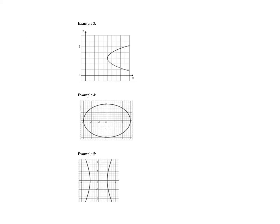In this graph, if you just need to state the domain and range from the picture: going to the right, the line is continuous, so x is any real number. But going to the left, it stops at x equals 5. So we say x is greater than or equal to 5 — including 5 and anything bigger. The range is any real number because as you go up and down it doesn't stop, so y has no restriction.